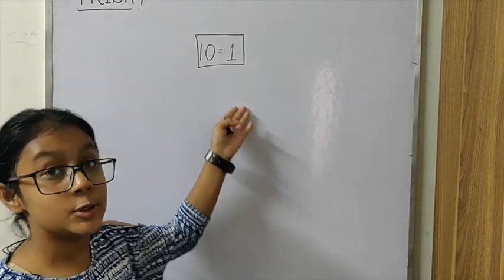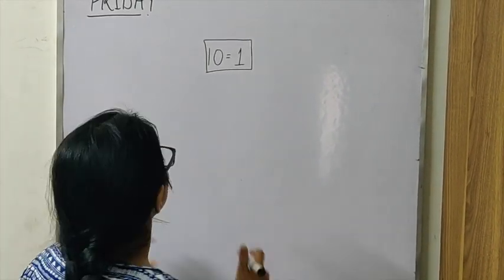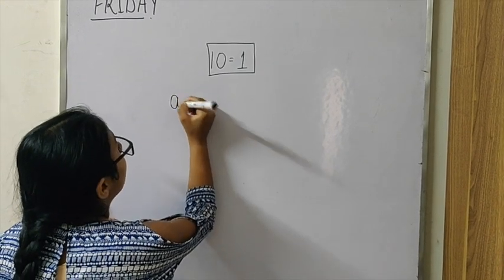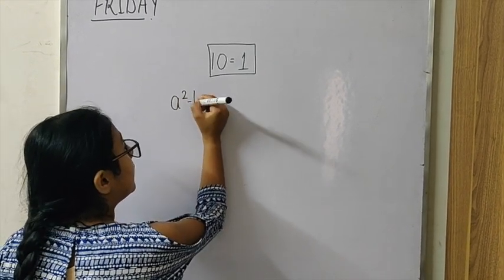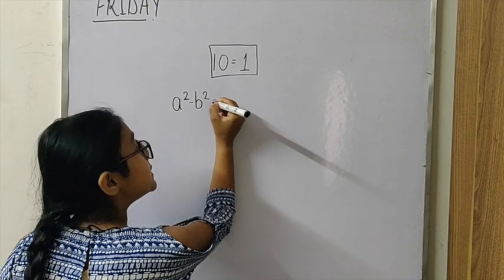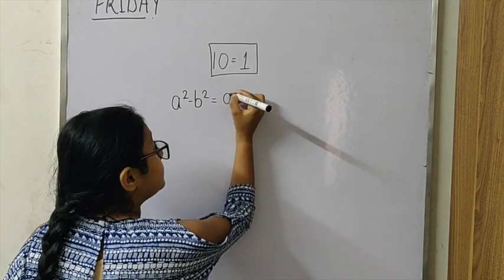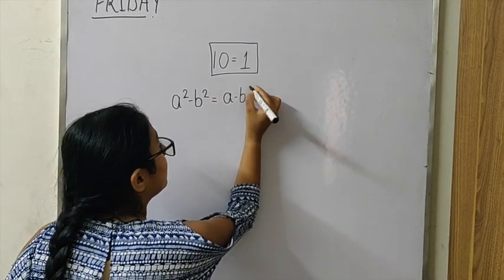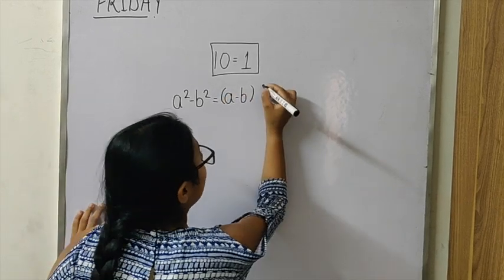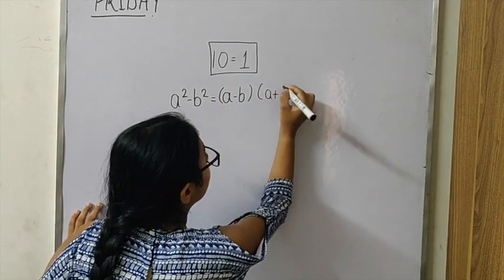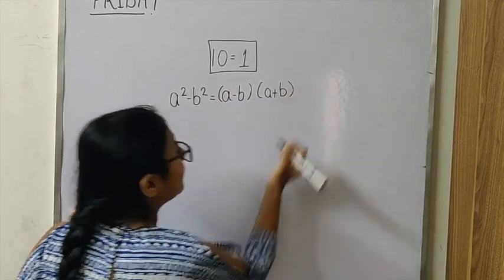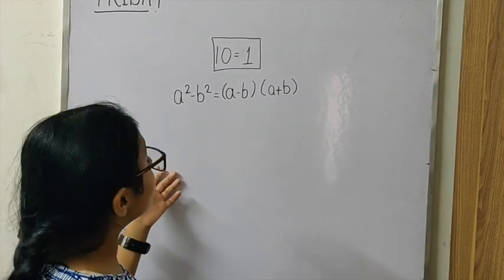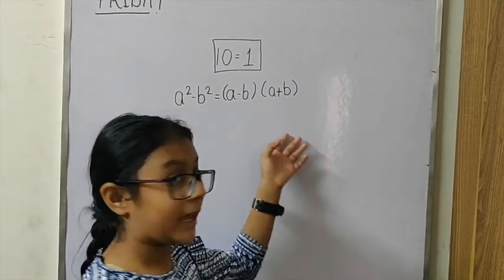Just because of zero, you can prove that they are equal to one. The equation a² - b² is the same as (a - b) multiplied by (a + b). Just because of this simple equation, we can prove that 10 is equal to 1.